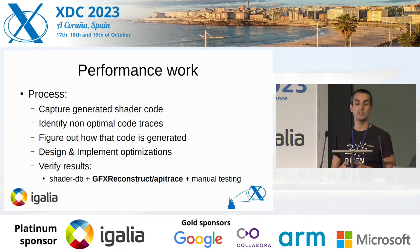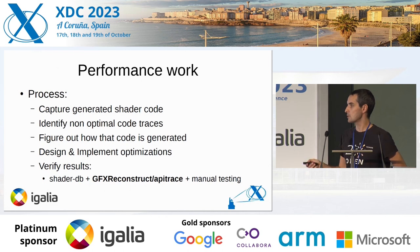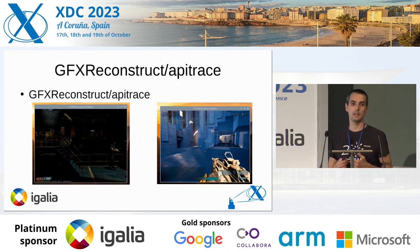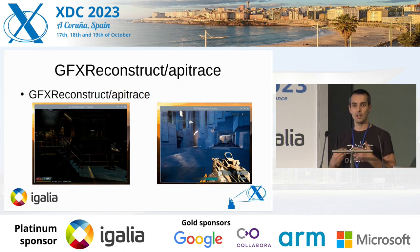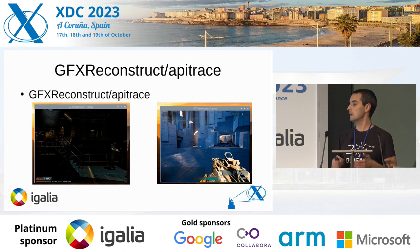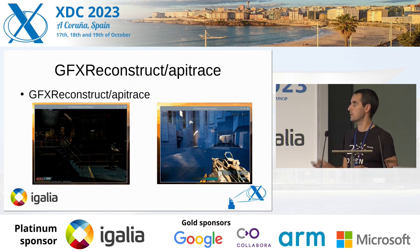We used SPIRV-DB, we used manual testing, and we also used gfxreconstruct and apitrace. Those are tools that allow you to capture the calls to the API — Vulkan calls in the case of gfxreconstruct, or OpenGL calls in the case of apitrace.